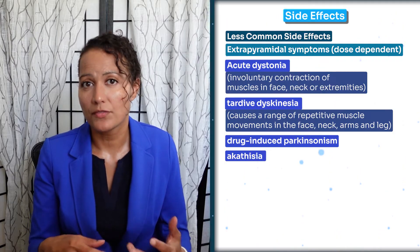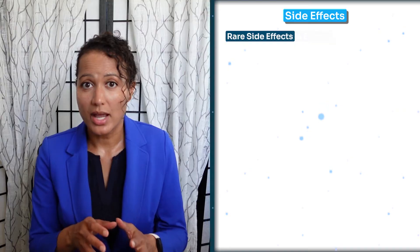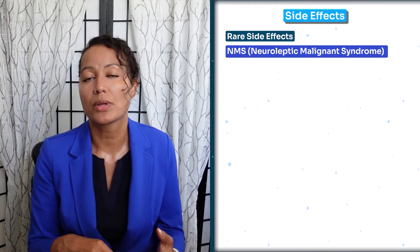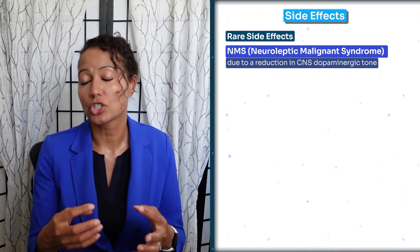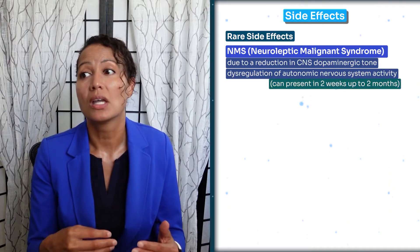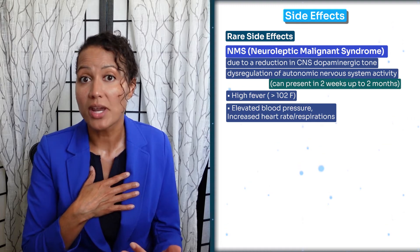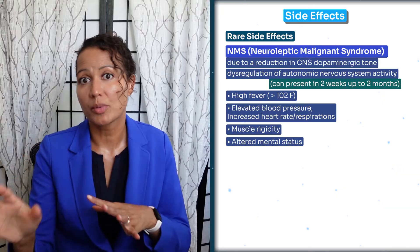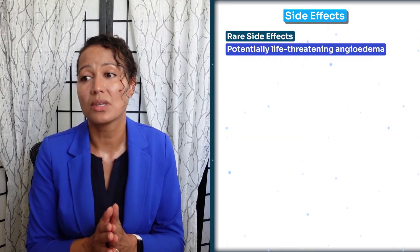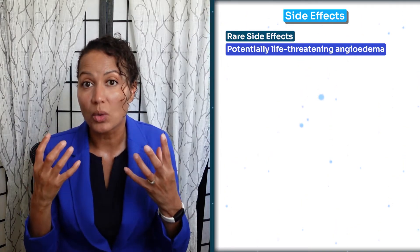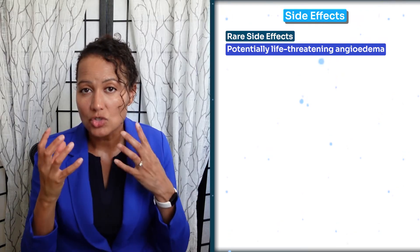Another less common side effect is cardiovascular changes like QTc prolongation, low blood pressure, or decreased heart rate. Rare side effects include neuroleptic malignant syndrome, believed to be due to reduced central nervous system dopaminergic tone and dysregulation of the autonomic nervous system. Symptoms include high fever greater than 102 degrees, elevated blood pressure, heart rate, respirations, muscle rigidity, and altered mental status — these require emergency room attention. Another rare but dangerous side effect is angioedema — severe swelling of the face and neck that can obstruct breathing, requiring immediate emergency care.